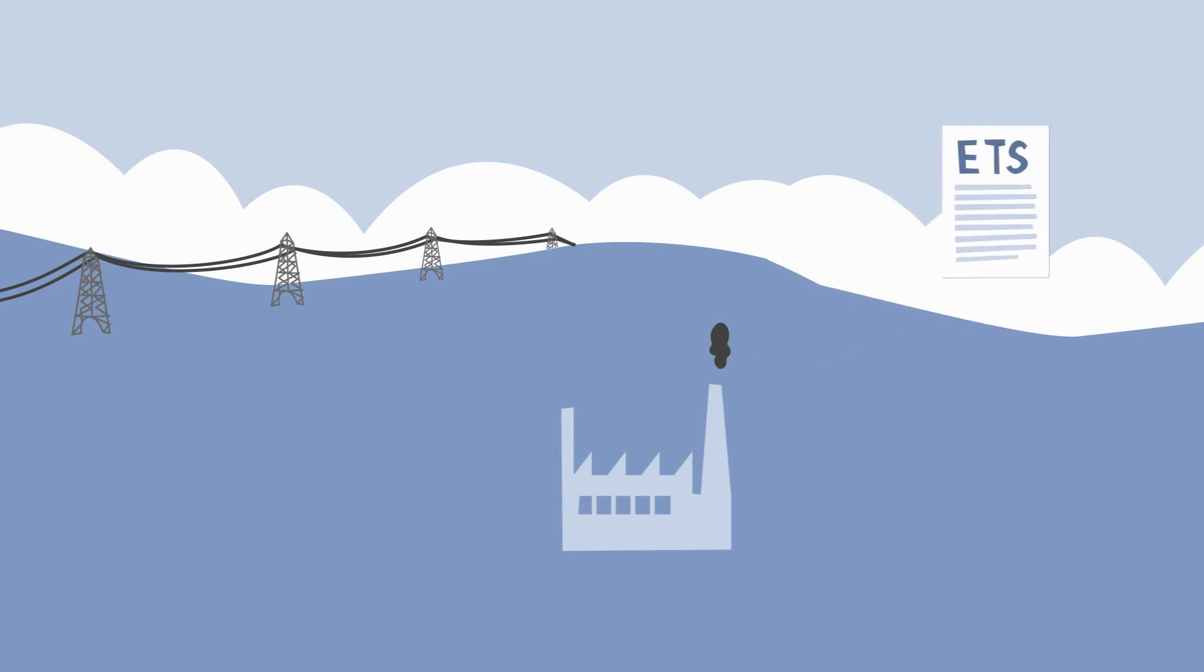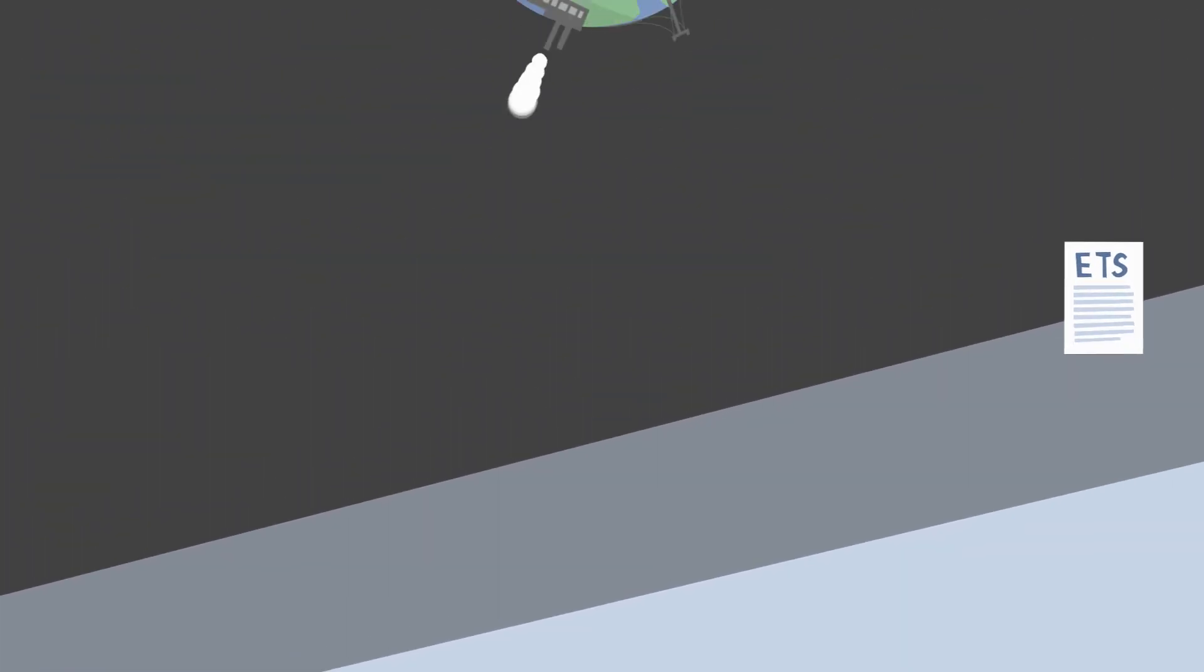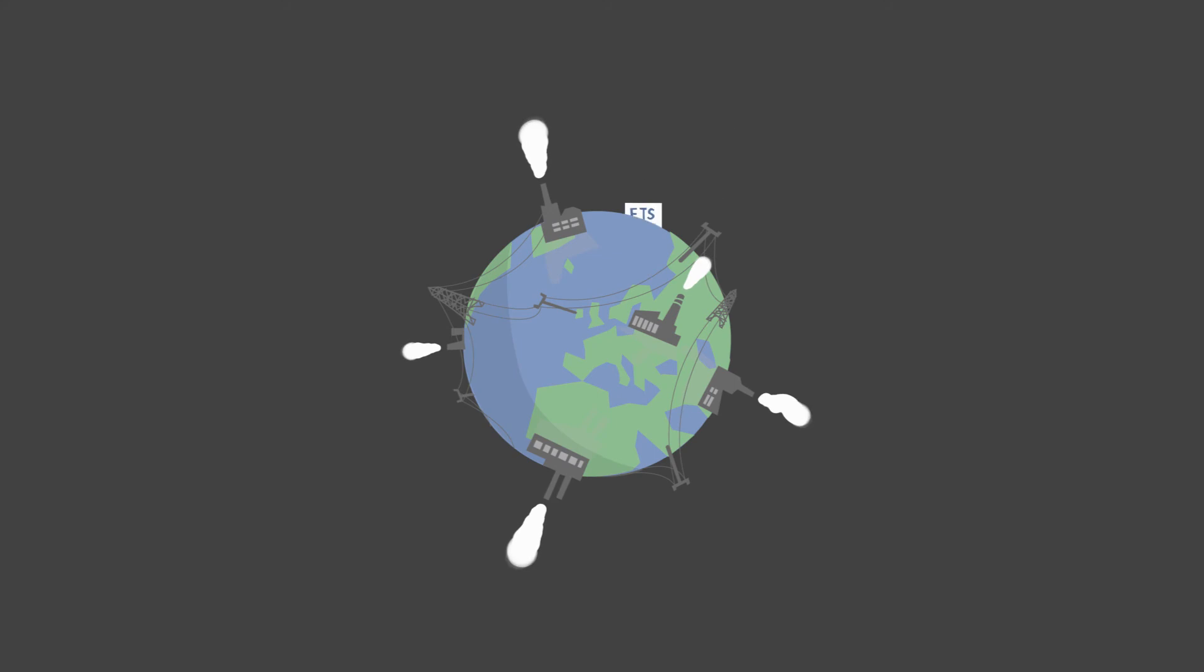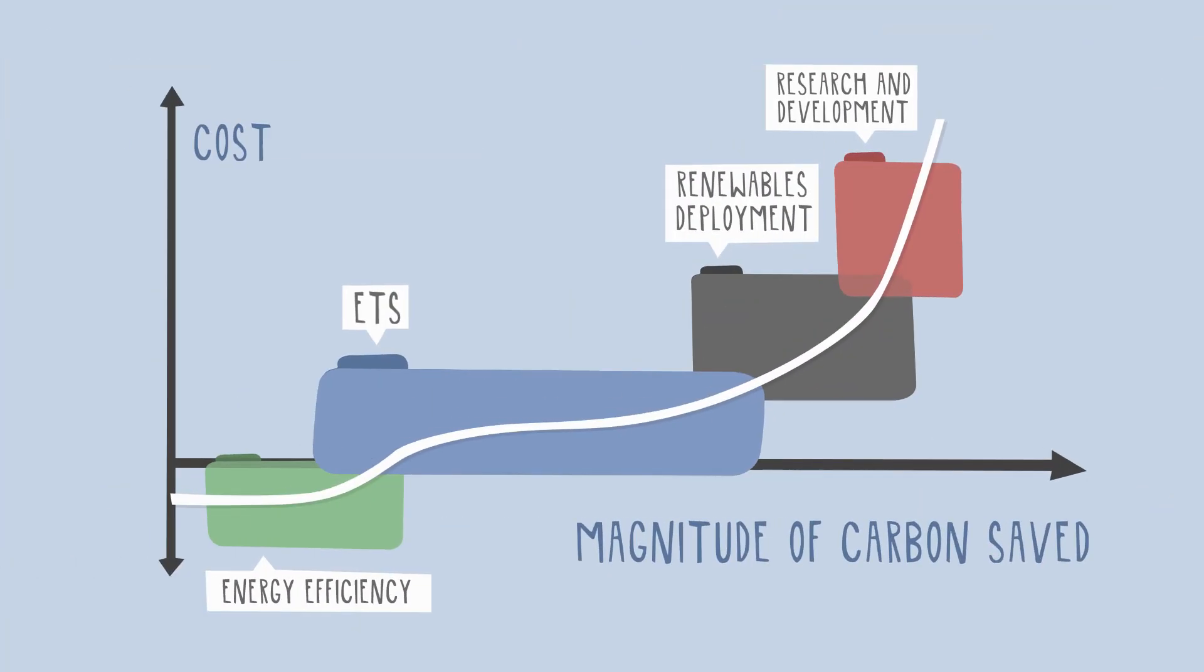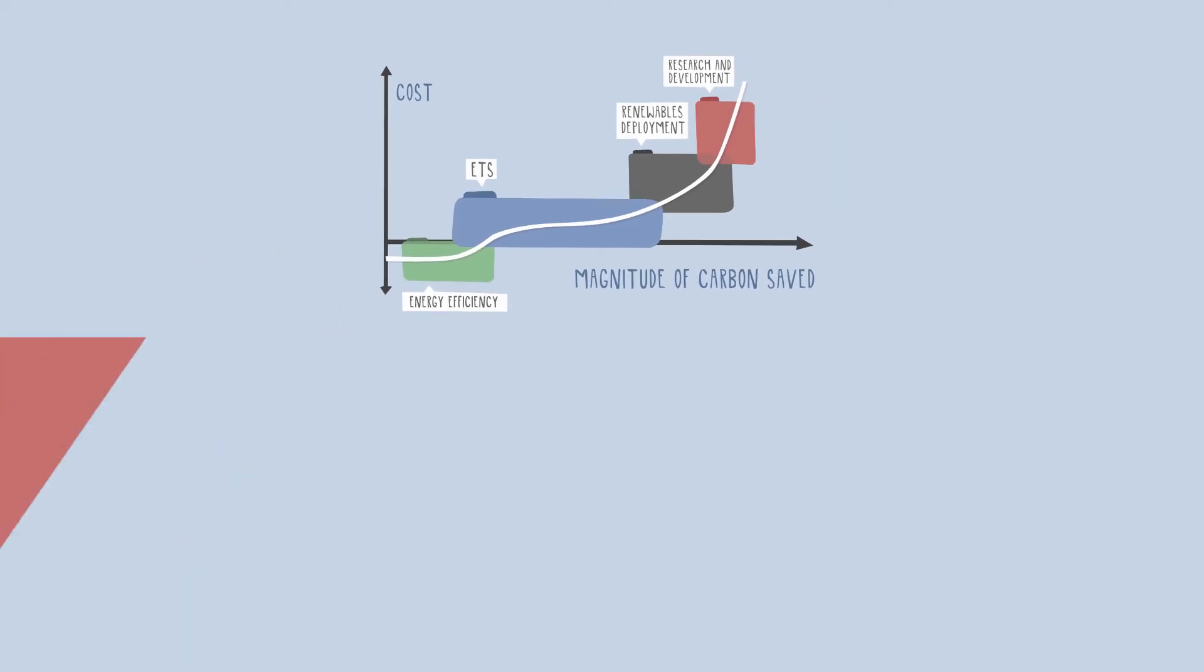The ETS oversupply issue has exposed the challenges of designing climate policy within a globalized energy system. Complex interactions between fuel prices and technology costs have undermined the ETS and caused policy overlap.